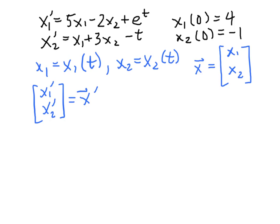Now in addition, let's consider a matrix A, and let's let A be the matrix whose entries, it'll be a 2 by 2, its entries will be 5, -2, 1, and 3.